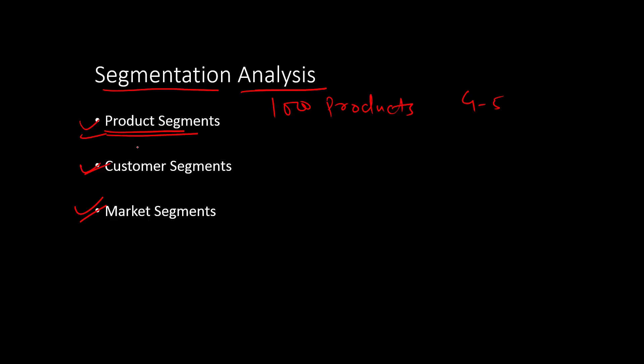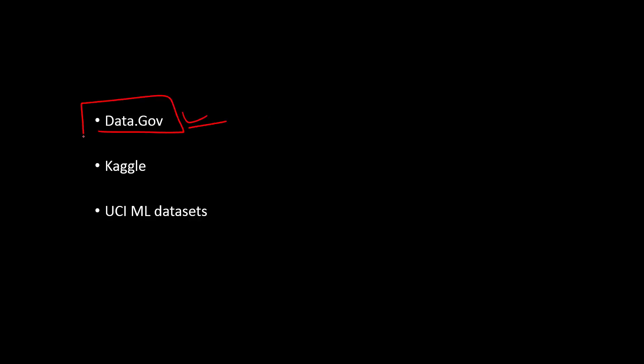These are eight to ten broad categories of data science projects you can implement. If you're a student, you can try these on your own. If you're working in the retail industry, you can start doing a proof of concept using sample data from your department to showcase to management. If you don't have access to such data, you can go to data.gov, which has many retail datasets, or use Kaggle, which has free public datasets. UCI ML datasets is also a good resource for retail data.